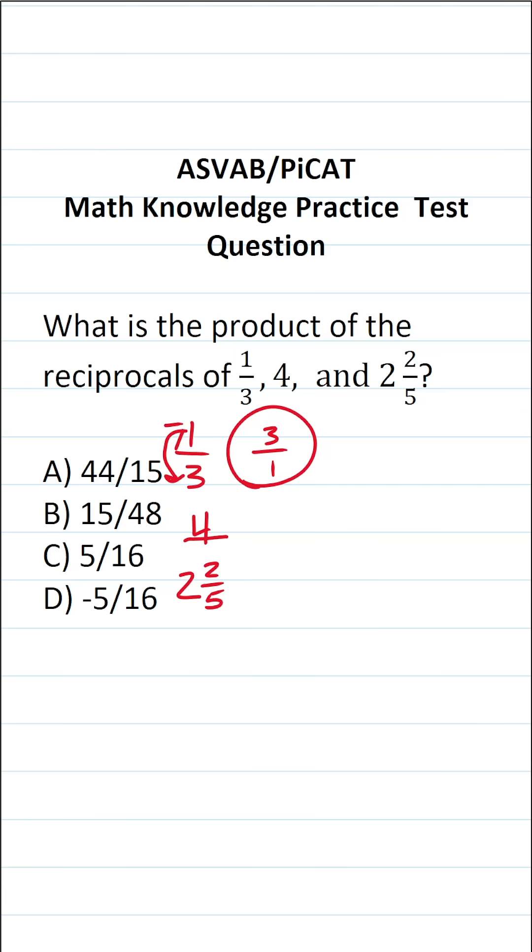Let's find the reciprocal of four. The first thing I'm going to do is rewrite it as a fraction by placing it over one. And then in order to find the reciprocal of four over one, all we do is flip it. So the reciprocal of four over one is going to be one over four.